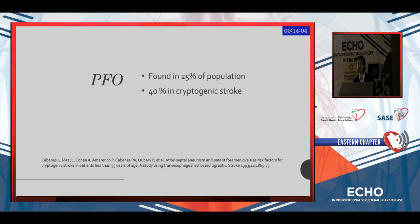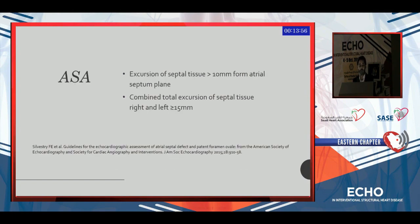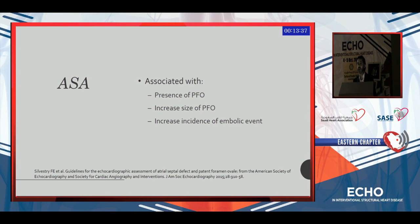PFO is found in a quarter of the population, however it's found in 40 percent of people with cryptogenic stroke, so it has a role in stroke. Atrial septal aneurysm is defined as excursion from the septal plane of more than 10 millimeters, or a combined total excursion left and right of 15 or more millimeters. It is associated with the presence of PFO — not just any PFO, but a large-size PFO — and of course an increased incidence of embolic events.